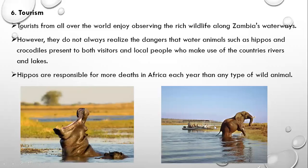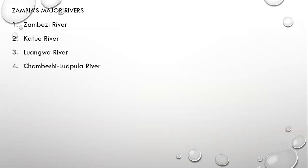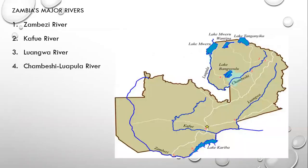These are tourists on the Kafue River within the Kafue National Park. Now, some examples of Zambia's major rivers include the Zambezi River, the Kafue River, the Luangwa River, and the Luapula River — these are our major rivers.